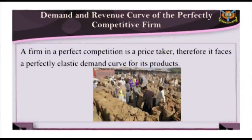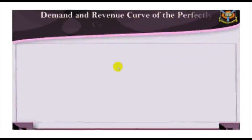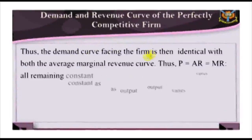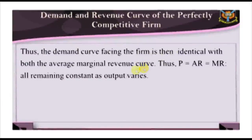An example will make this point clearer. Let's assume that a farmer faces a perfectly elastic demand for yam at the market price of 100 naira per tuber. This implies that for each additional tuber sold, the farmer would realize 100 naira. This amount is also the average revenue. Thus, the demand curve facing the firm is identical with both the average revenue and marginal revenue curve, so that P equals AR equals MR.